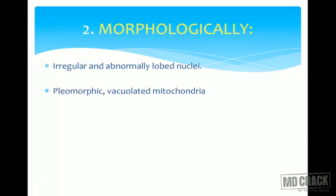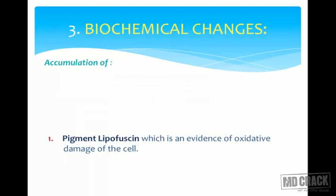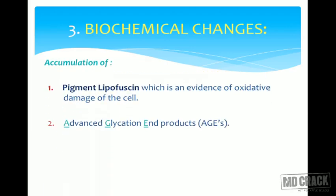Morphologically, at the electron microscopy level, the lobes of the nucleus are irregularly and abnormally folded. Mitochondria are pleomorphic — they vary in size and shape and may show empty-appearing vacuoles. There is a decreased number of endoplasmic reticulum, resulting in decreased protein synthesis, and the Golgi apparatus is distorted, so proteins synthesized by the endoplasmic reticulum are not structurally stable.